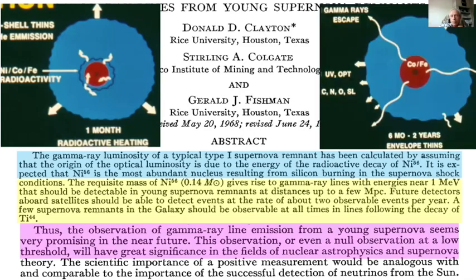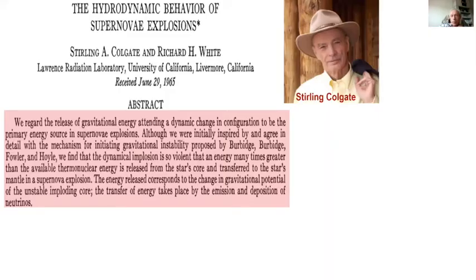Hoyle had invoked rotational instability to eject nuclei from exploding stars; later Fowler and Hoyle suggested thermonuclear energy during the supernova explosion. They made extensive calculations — amazingly, using only slide rules — but this was not the final answer.